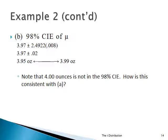We could note that hypothesis testing and estimation are just two sides of the same coin. If we look at this and ask, 'Is 4 in there?' — that was the claim — the answer is no. And so if I use a 98% confidence interval, the claim of 4.0 would have to be rejected.